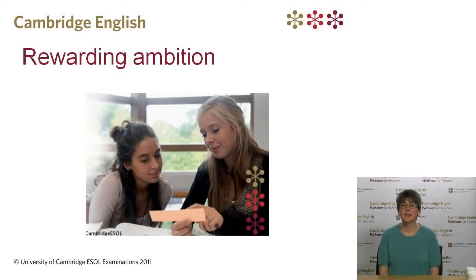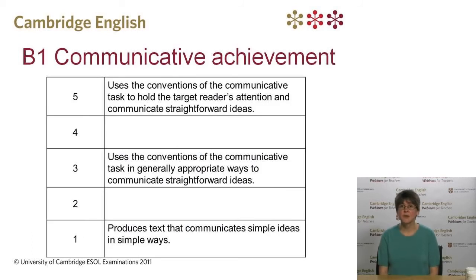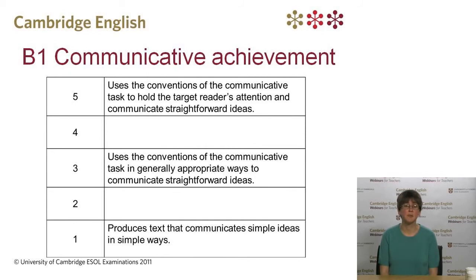We believe it's important that learners' ambition is recognised. By ambition, we mean a learner's attempt to use more complex language to express ideas. This is positive learner behaviour that we want to encourage, and so the assessment scales are designed to reward candidates who try to use more complex language. Let's start by comparing some of the descriptors to see how they reflect different levels of performance. On the screen, you can see the descriptors for Communicative Achievement at B1 level — that's Preliminary or PET level.